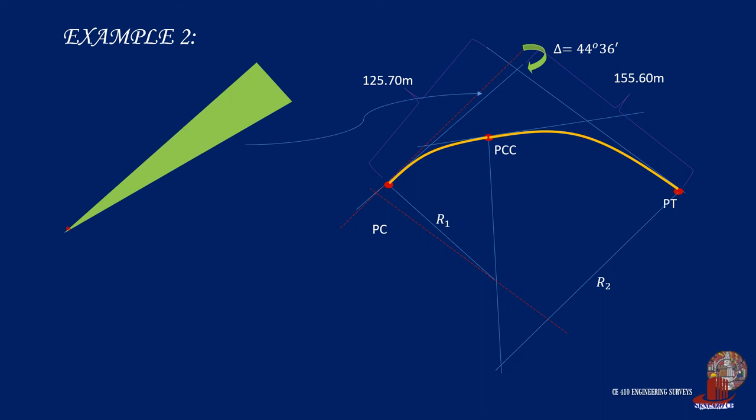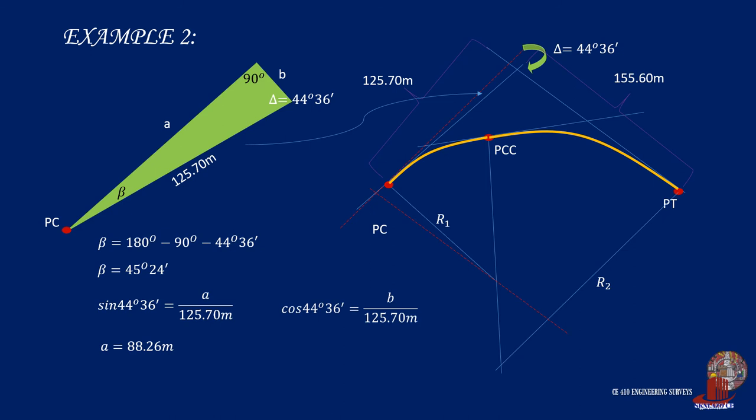Starting with one right triangle, the hypotenuse is the given length of 125.7 meters. One angle is identified as the transverse angle of delta. Compute the other angle beta as 180 degrees minus 90 degrees less 44 degrees 36 minutes, which is 45 degrees 24 minutes. The sine of 44 degrees 36 minutes equals A over 125.7 meters. B is computed as 89.5 meters.